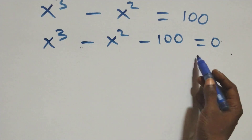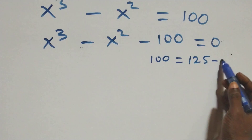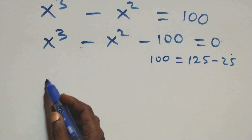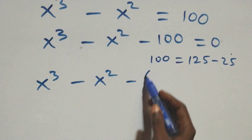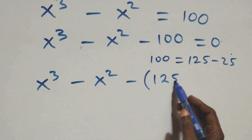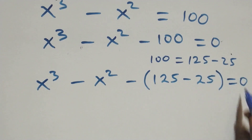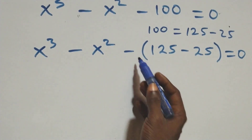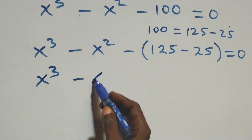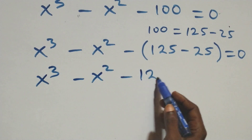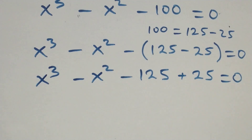Then here we can write 100 as 125 minus 25. So we have x cube minus x square, then minus brackets 125 minus 25, close brackets, equals to 0. Then we open these brackets, and this becomes x cube minus x square minus 125 plus 25 equals to 0.